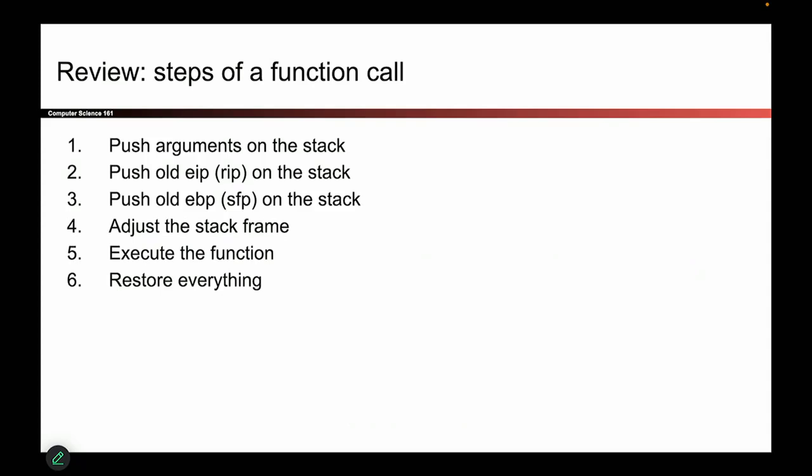So remember from last time, what we were doing was we were trying to call a function. So there was a function called main that was the caller, and it was calling foo, and we called that the callee. And all of these steps were in service of calling the function. And the three things that we had to do were we had to shift all three of those registers so that they were pointing at different places.